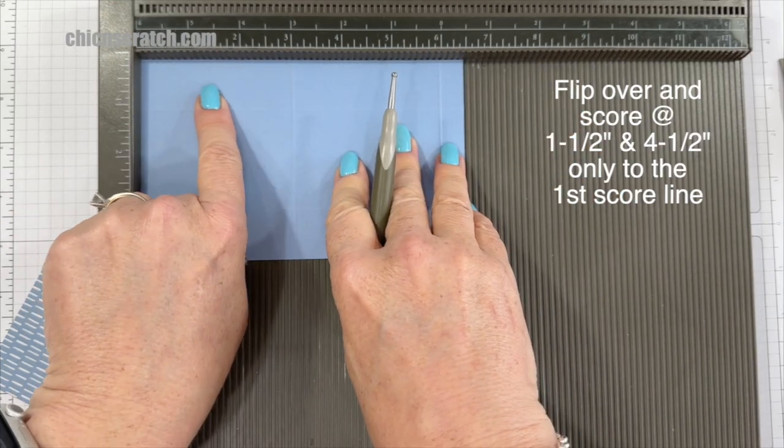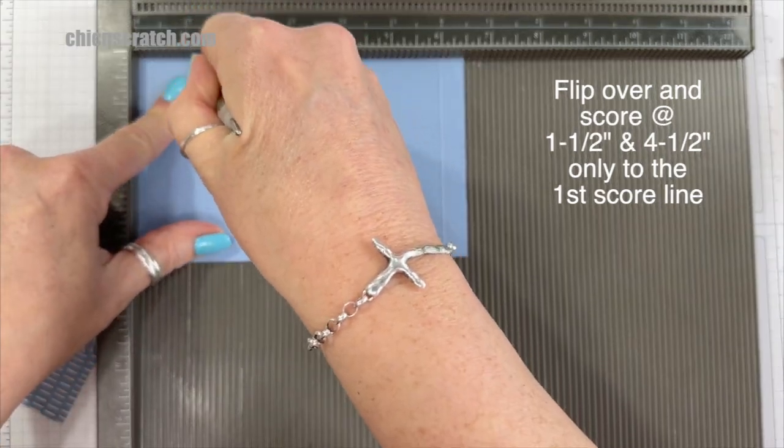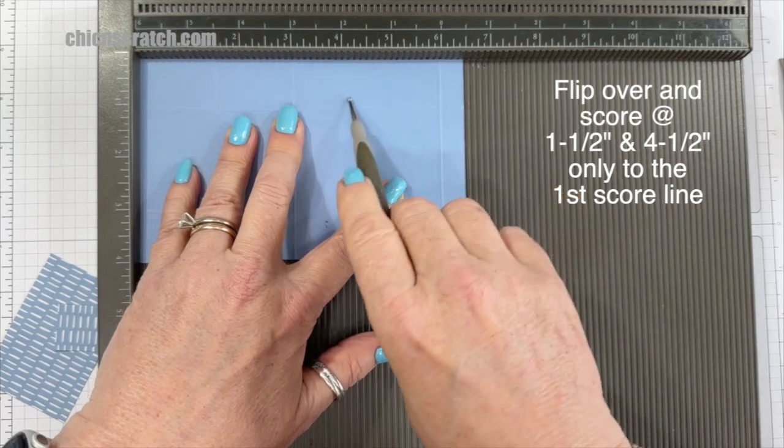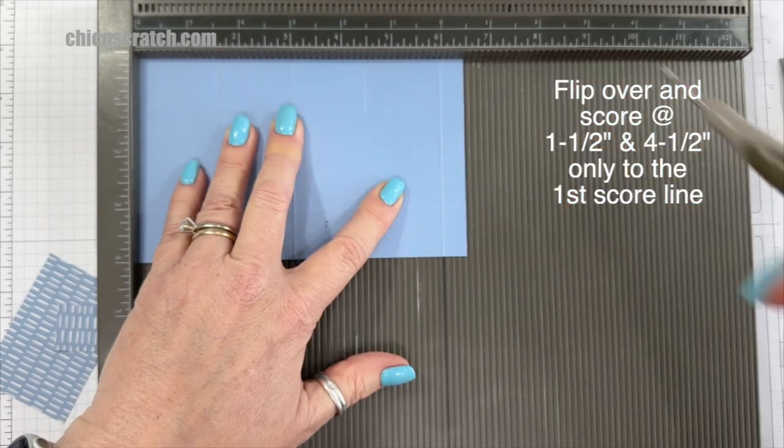And we're going to score at one and a half to that first score line, and then four and a half to that first score line. Okay.